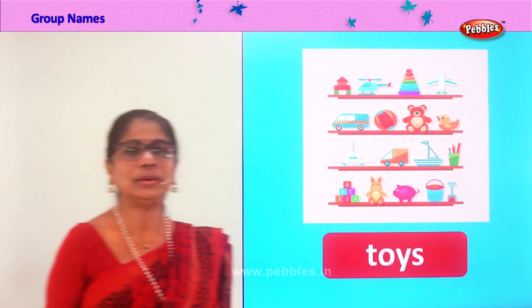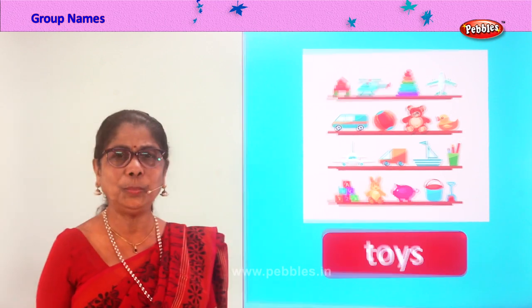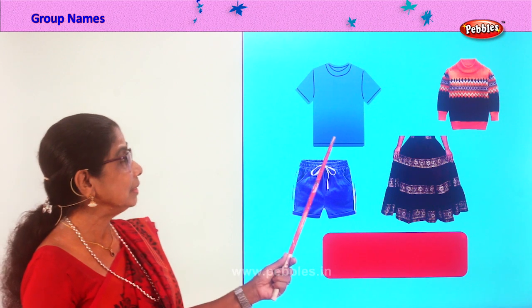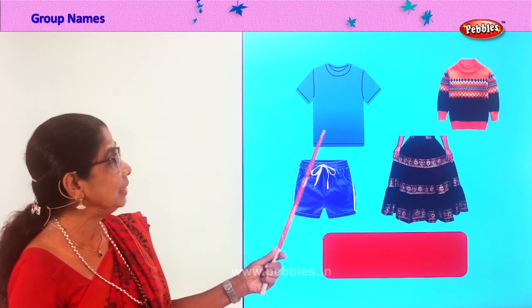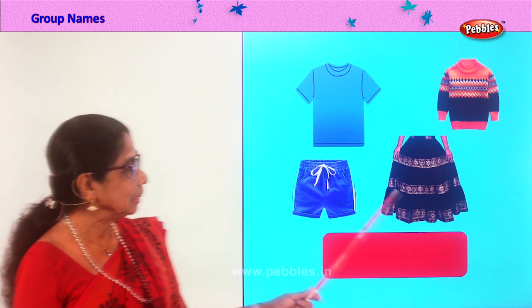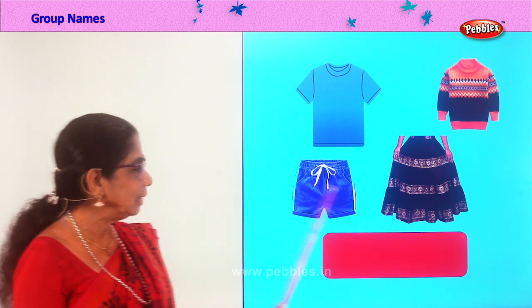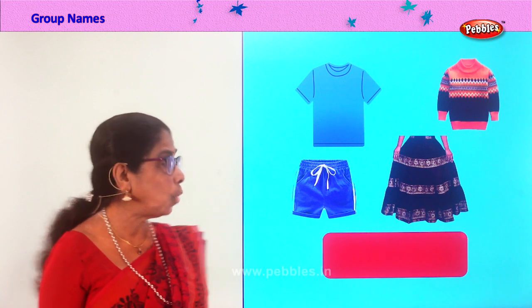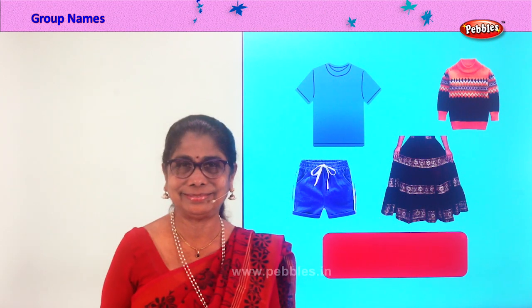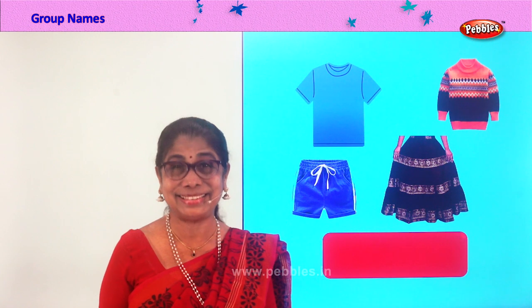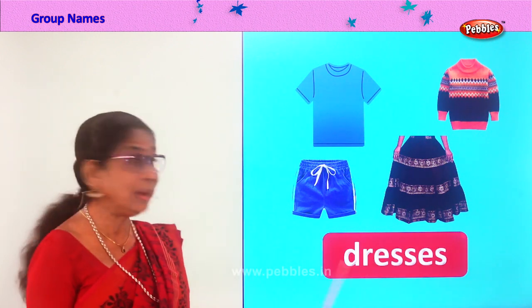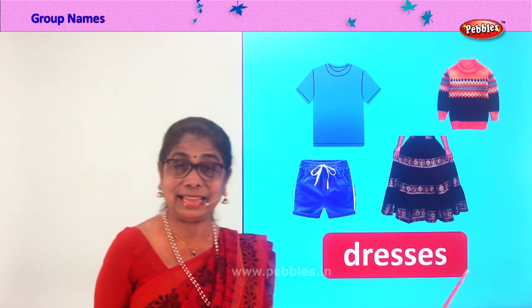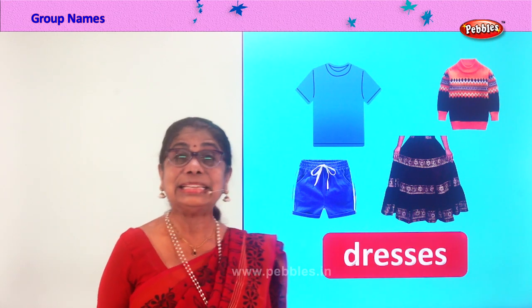Let's go on to look at another group. You have a nice top, a lovely skirt, a shorts, and a pullover to keep you warm. What is the name for all this together? Dresses! Spell dresses: D-R-E-S-S-E-S. These are all dresses.